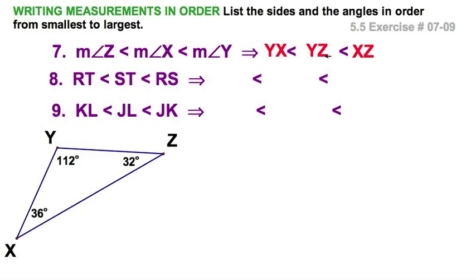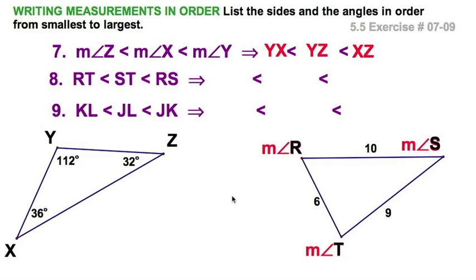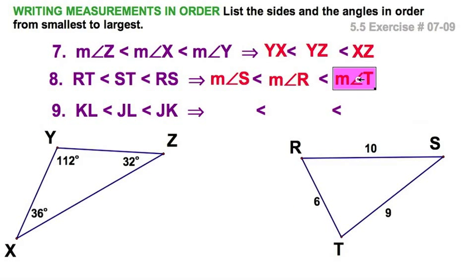We're ordering them from least to greatest. RT is the smallest side at 6, so the angle opposite that is S. The measure of angle S will be the smallest. Then the next in order, ST has a measure of 9, so angle R will be opposite that. Finally, the largest side RS is 10, opposite angle T.